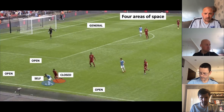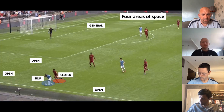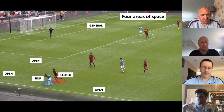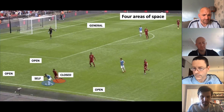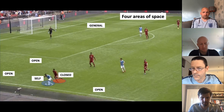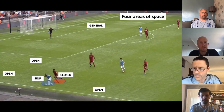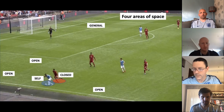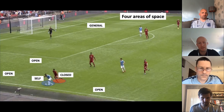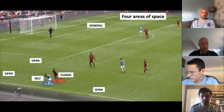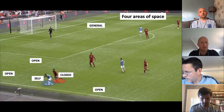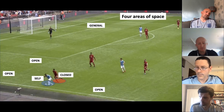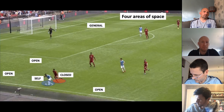Sean Reid explains a framework around four areas of space. The first is general space — which could be the whole pitch, the penalty area, or a training area — giving players a reference point to understand and identify where they are in relation to everything else: the ball, other spaces, other players, the goal. This heavily influences the way they move, when they move, and how they move.